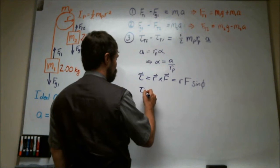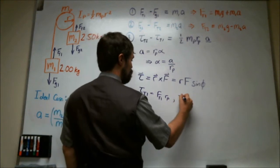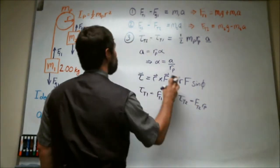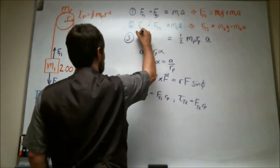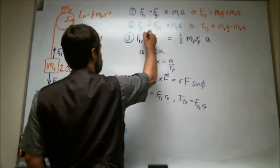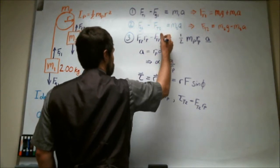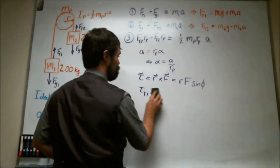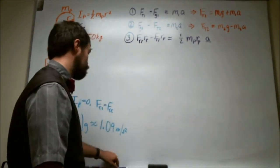So torque for tension 1 is going to be force of tension 1 times radius. And torque for tension 2 is going to be force of tension 2 times radius. So I can replace those two terms up in this equation. So I have force of tension 2 times radius minus force of tension 1 times radius.